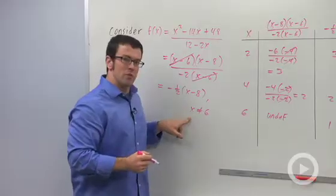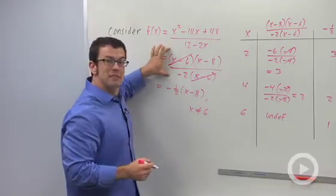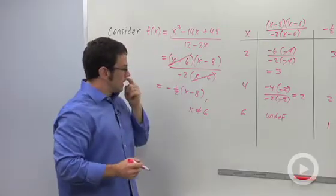Saying this, giving this domain restriction, means that this function will now have the same domain as this function. And now they're equal. Now you can write an equal sign here.